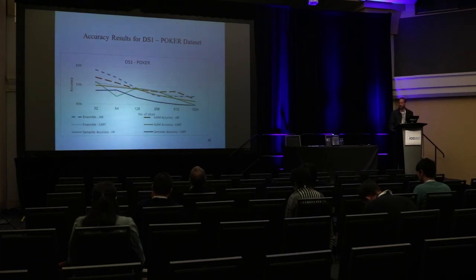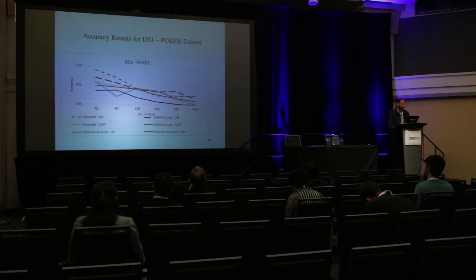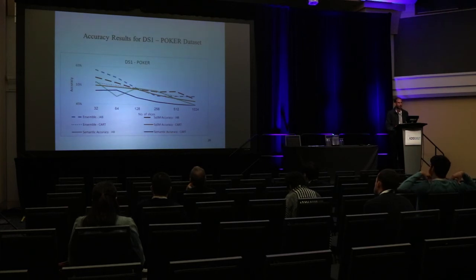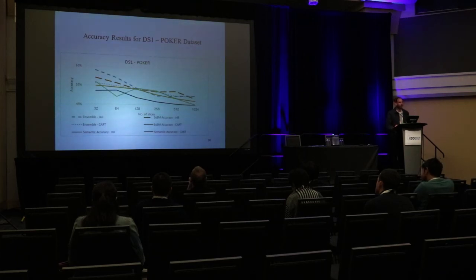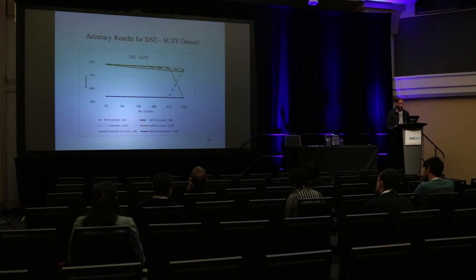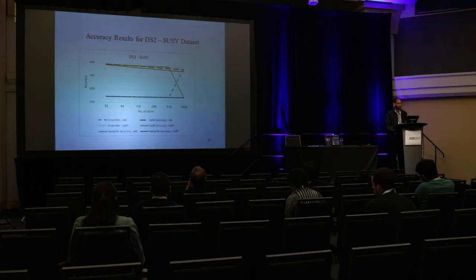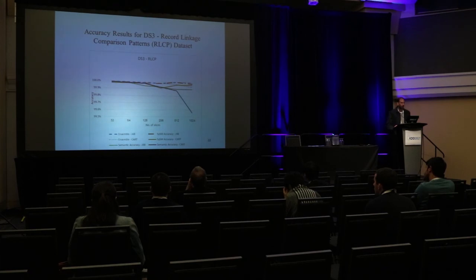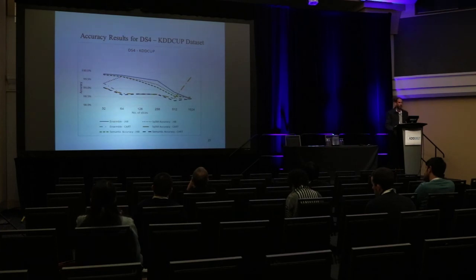This slide shows the comparison between the accuracy of different models according to the number of shards. The x-axis is the number of shards and the y-axis shows accuracy. For DS1, the POCR dataset which is quite small, there is a decrease with number of shards. For the SUSI dataset, which is quite large, we see stability over the number of shards. For RLCP and KDD Cup, we also see approximately stable accuracy over the number of shards.